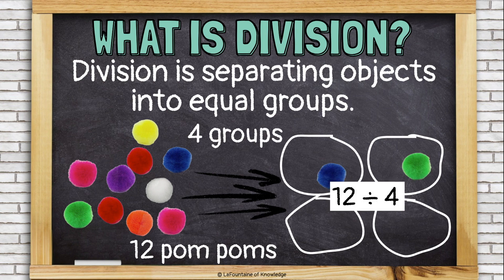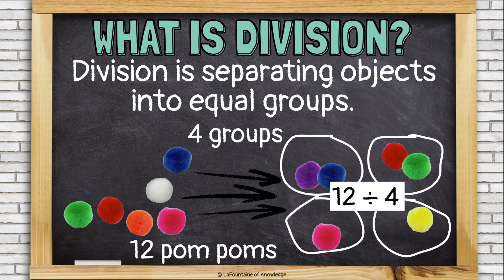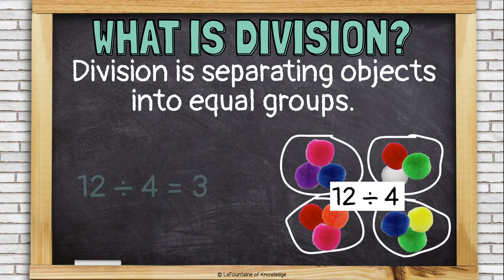To do this, I'll put 1 pom-pom in each group to make sure I keep the same number in all 4 groups. The answer is the number of pom-poms in each group — 3. So 12 divided by 4 is 3.